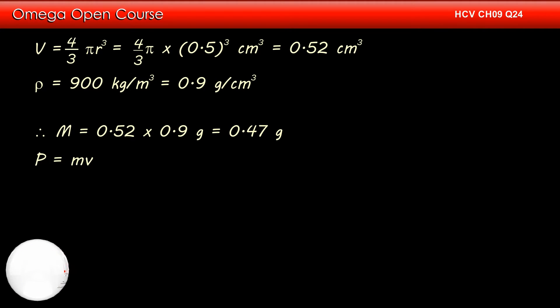Momentum of each hailstone is its mass times velocity, which is 0.47 × 20 or 9.4 g·m/s.